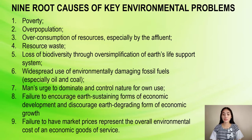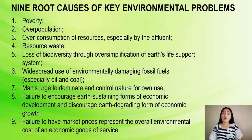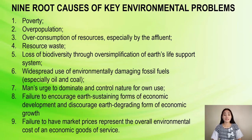Let us move on to the nine root causes of key environmental problems. First is poverty. Poverty among people puts stress on the environment, while environmental problems cause severe suffering to the poor. People, whether rich or poor, consume water, food, and natural resources to remain alive. All economic activities are directly or indirectly based on natural resources, and any pressure on natural resources can cause environmental stress. Environmental damage can prevent people, especially the poor, from having good hygienic living standards, as poor people rely more directly on the environment for their survival.